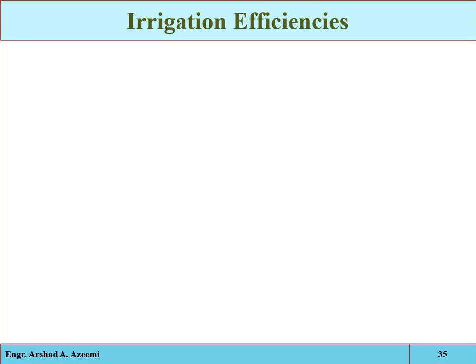In the first two parts we covered different methods — direct and indirect — for the determination of crop water requirement at a specific area under given conditions. Now in the third part of this lecture we will discuss the different irrigation efficiencies. Efficient use of water is an obligation of each user as well as of the planners.